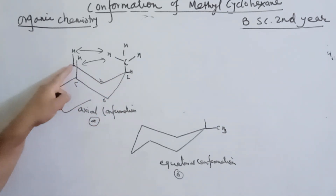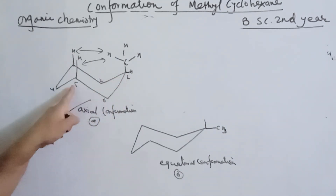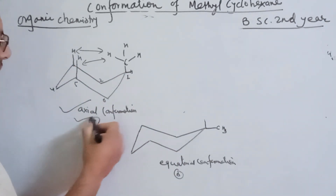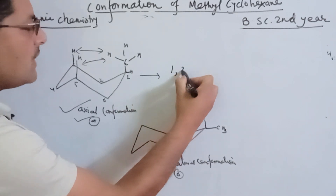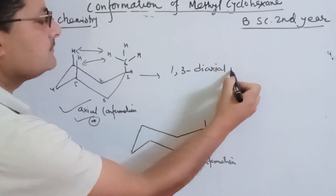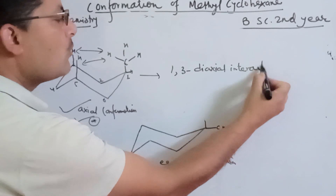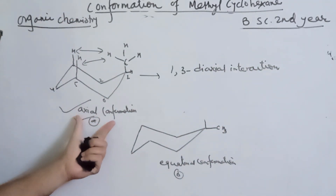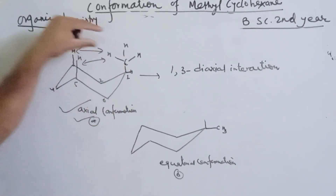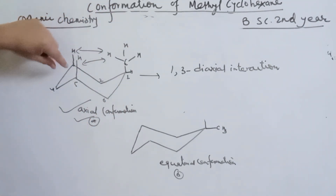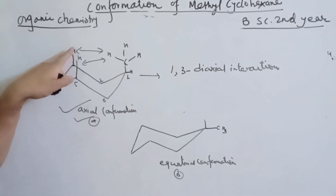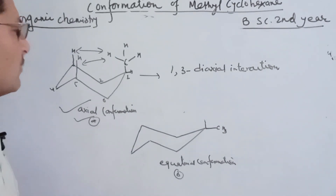We have one, two, three — we have a 1,3-diaxial interaction. This is the axial conformation of methylcyclohexane. We have 1,3-diaxial interaction. So, the 1,3-diaxial interaction feature — if you have 1,3-diaxial interaction, the level of steric strain increases.